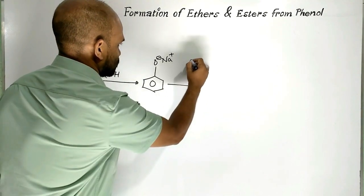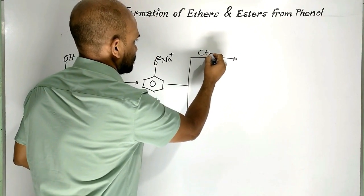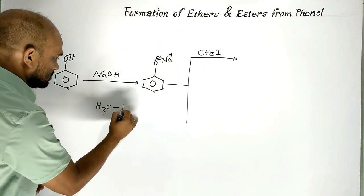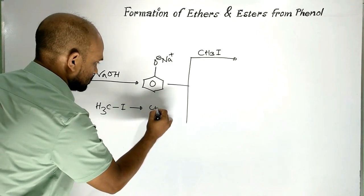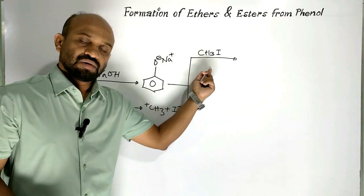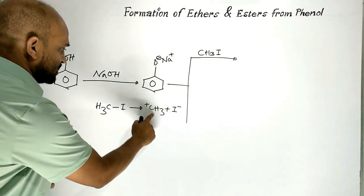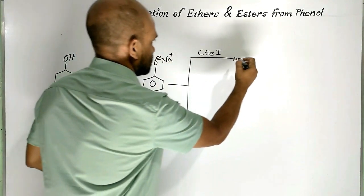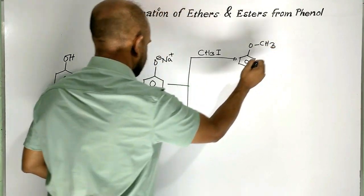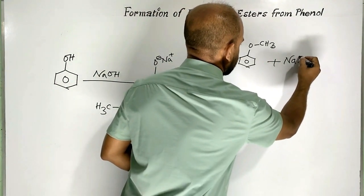Now this sodium phenate is treated with an alkyl halide like methyl iodide. Methyl iodide forms a methyl cation and iodide ion through heterolytic fission of the carbon-iodine bond. Then the methyl cation combines with oxygen to form the ether, and the iodide ion combines with the sodium ion to form sodium iodide.